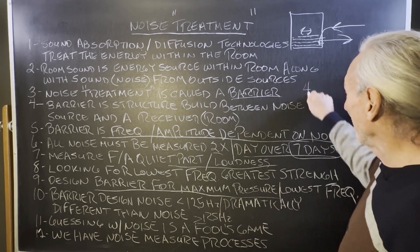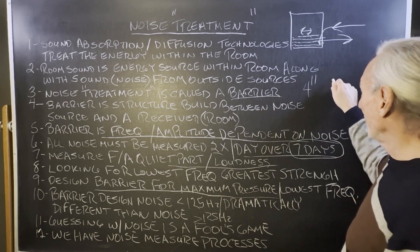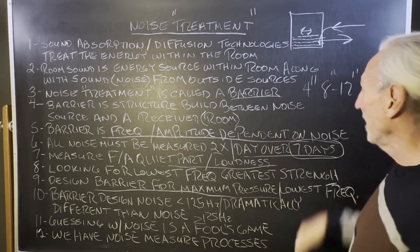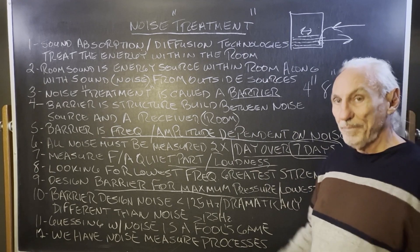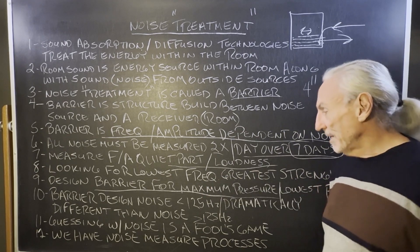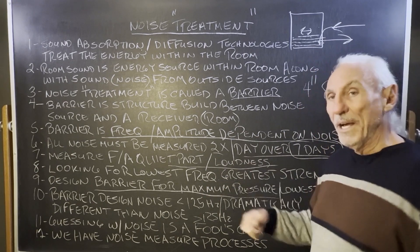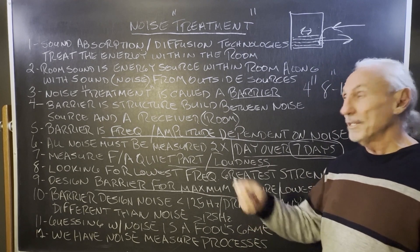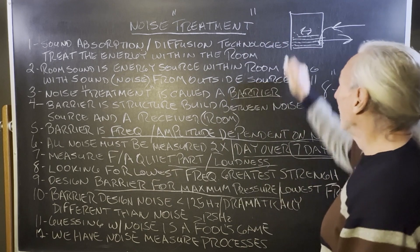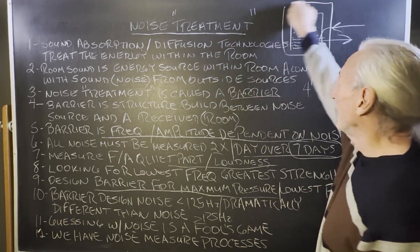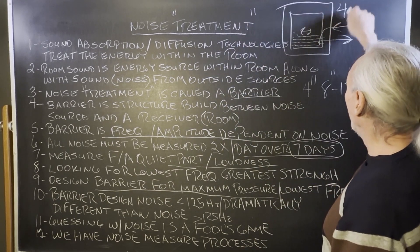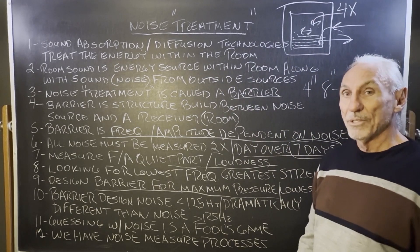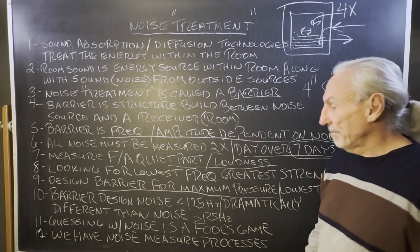Above 125 Hz, most of that can be handled in four inches. If you get below 125 Hz, you could be talking 8 to 12 inches maximum depth. So it's expensive. We find that noise treatment is like three to four times more expensive than absorption and diffusion treatment for inside the room, so building your barrier can be four times the cost of treating the inside.